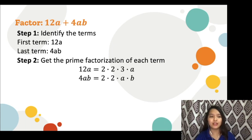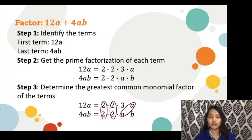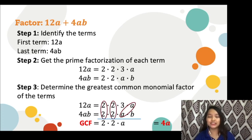Step 3: Determine the greatest common monomial factor of these terms. We will encircle the common factors among the two terms. The common factors are 2, 2, and a. For every common factor they share, you put it down. So you have 2 times 2 times a, which is 4a. The greatest common monomial factor of 12a plus 4ab is 4a.